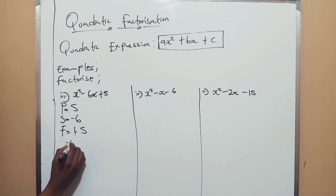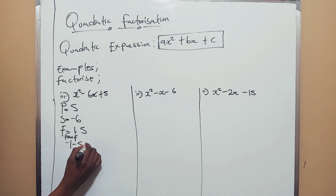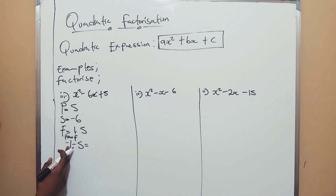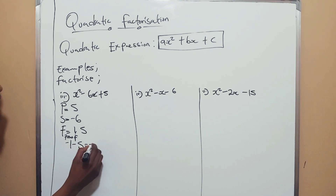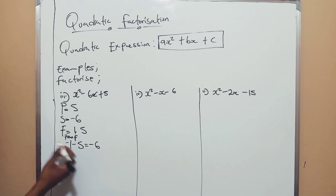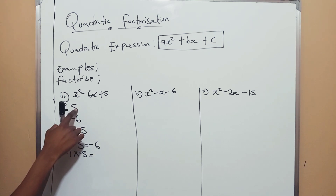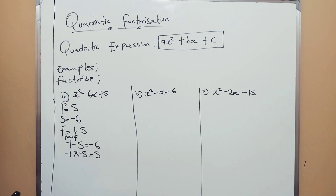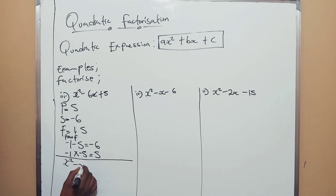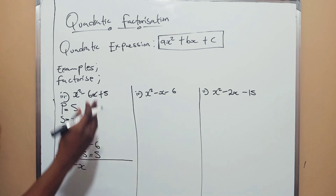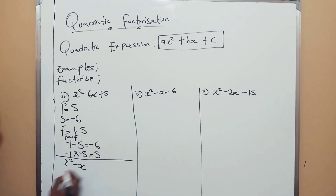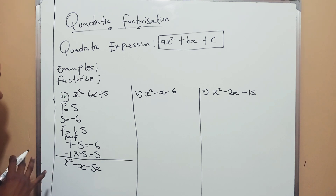So we're going to use negative 1 and negative 5. Proof: negative 1 minus 5 is negative 6 — same signs, we add. And negative 1 times negative 5 gives us positive 5. Now replace: x squared minus x minus 5x plus 5. Note that negative x stands for negative 1x — in maths, where there's x there's an invisible coefficient of 1. Don't forget the signs. If you are poor with signs, this topic will give you trouble.